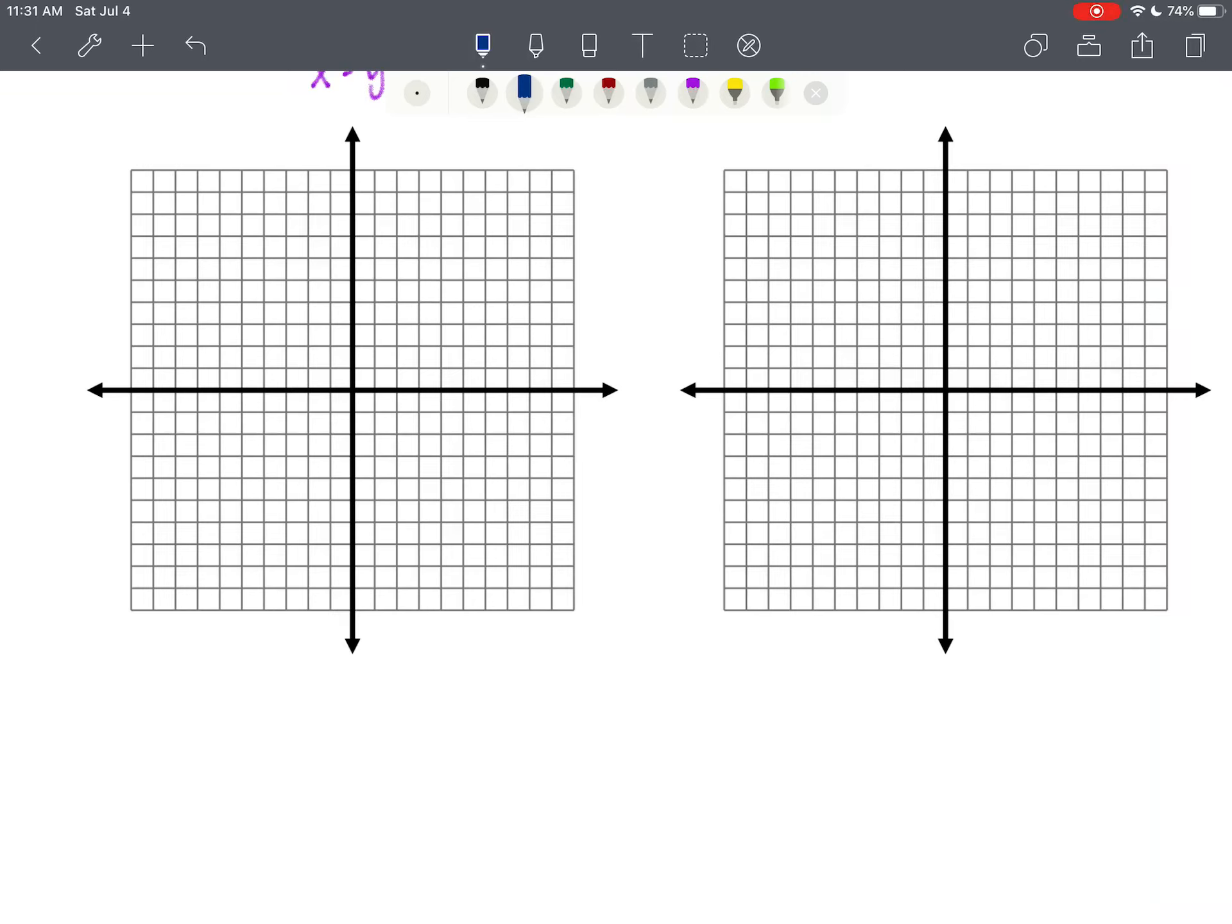We're going to be graphing parabolas. We're going to start with the parabola that we are most familiar with. The parabola that we are most familiar with is y equals a times the quantity x minus h squared plus k.